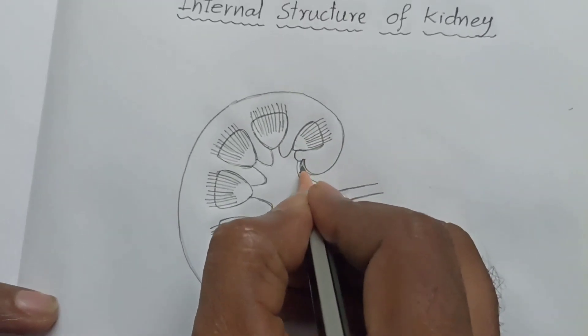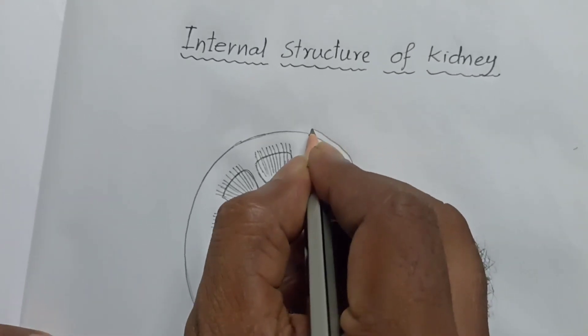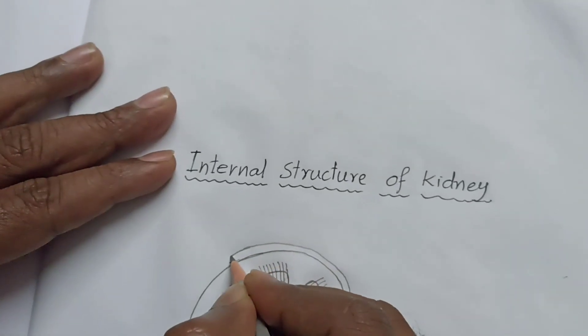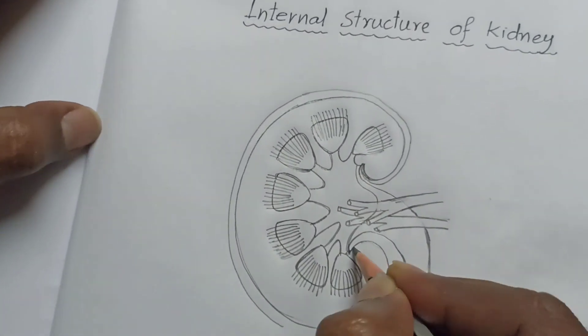Complete. This is the internal structure of kidney. You draw one more line like this around the kidney.